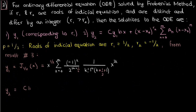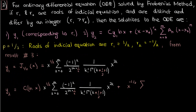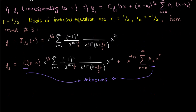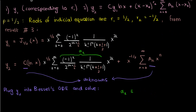I can also write down the second solution y2. The expression for y2 contains two sets of unknowns: the constant c and the coefficients a_n. To find these unknowns I'll have to plug y2 into Bessel's ODE and solve. To do that we first need to determine the first and second derivatives of y2. To simplify things I'm going to define alpha sub k as the constant in the first y2 series — the negative 1 to the k over 2 to the power 2k plus 1/2 times 1 over k factorial gamma of k plus 1/2 plus 1.